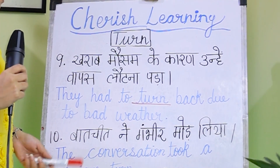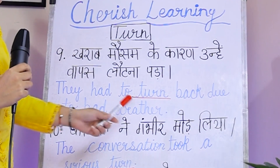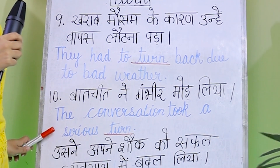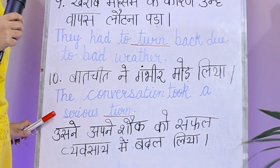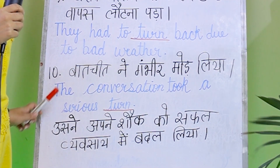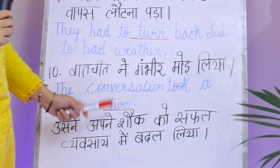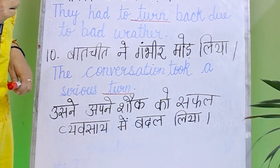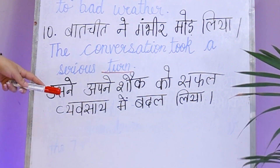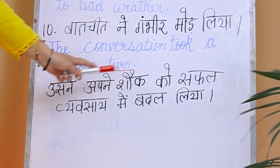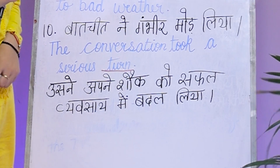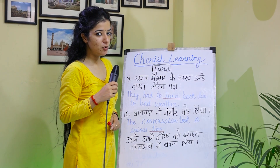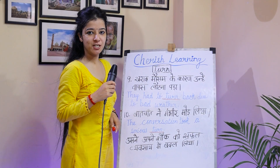Next sentence: 'The conversation took a serious turn.' Here, turn is used again. Now, one sentence is for you — 'He changed his hobby into a simple business.' How do you say this in English? You have to write it in the comments section.